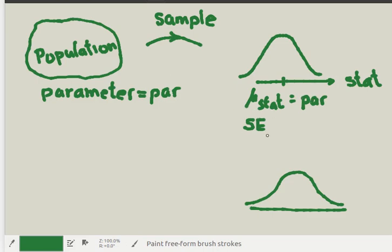We'll need to find the standard deviation — often called the standard error — of the distribution of this sample statistic, and from there we'll be able to find our confidence interval. So let's begin to fill in the parts.